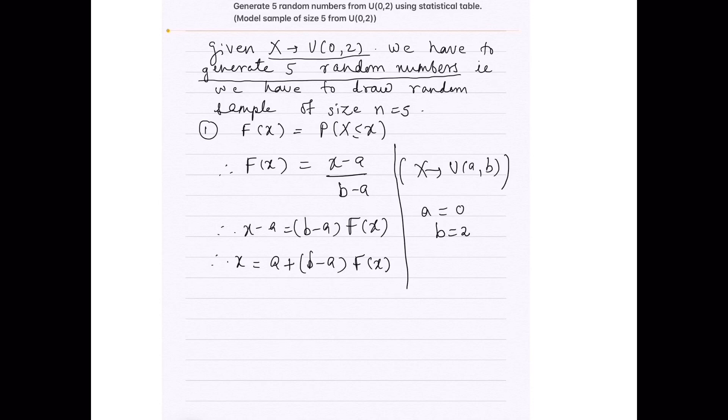Now, let us substitute the values of a and b here as 0 and 2. Therefore, we get x equal to 0 plus (2 minus 0) into F(x). That is x equals 2 into F(x).